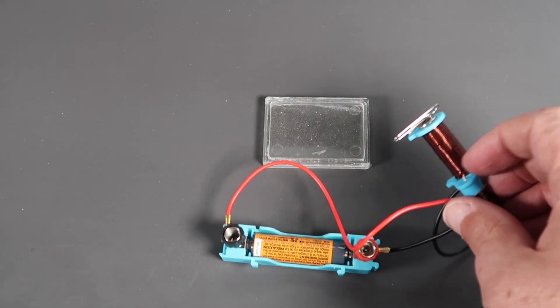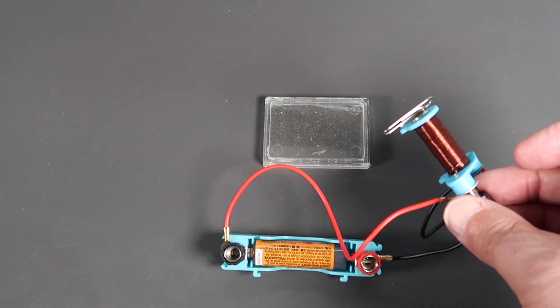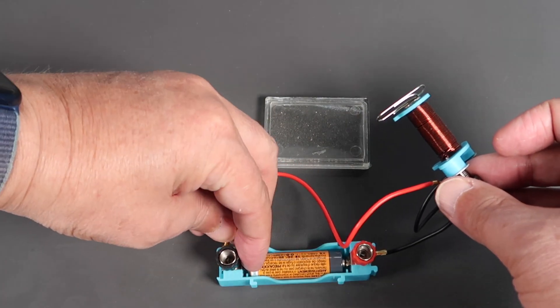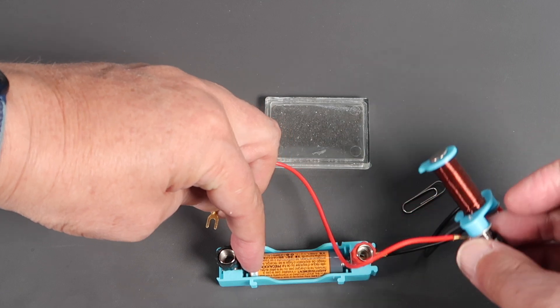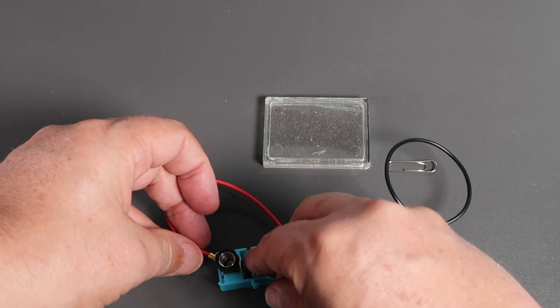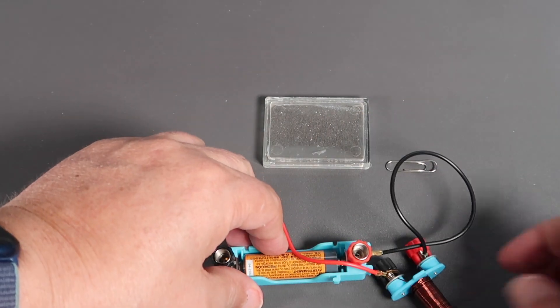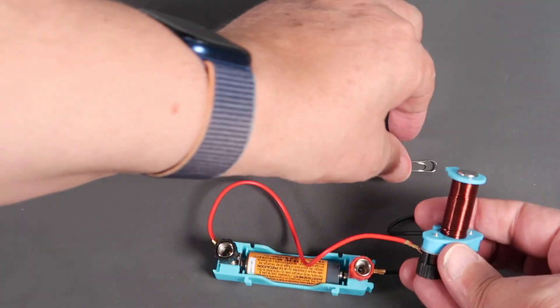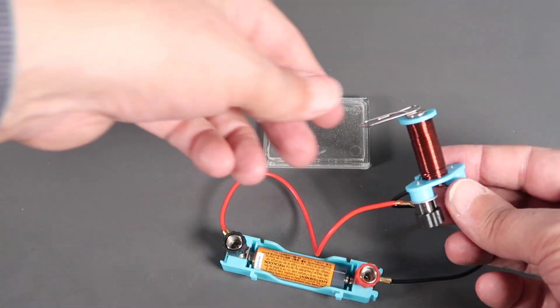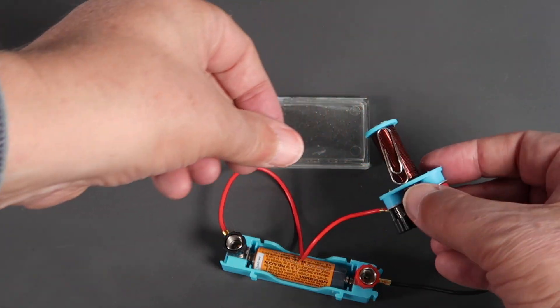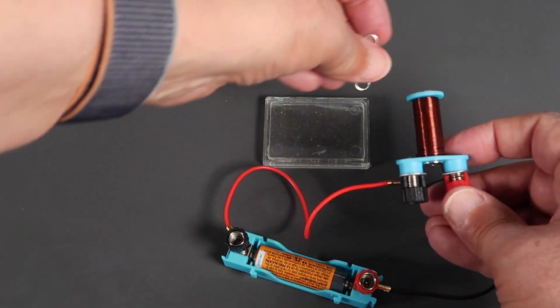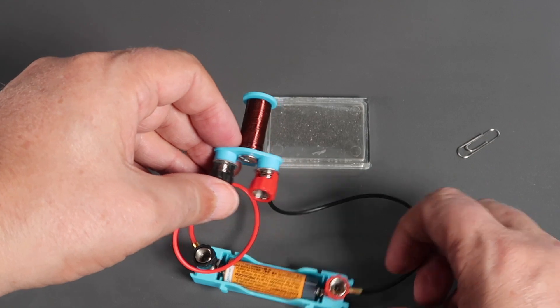And in fact you can see here, it's got the paper clip. If I pull this terminal off the battery, it drops the paper clip immediately. It's the electricity that's causing it to create the magnetic field. There is no magnetic field in this coil by itself. You can see here, it's magnetic. The electricity is generating a magnetic field.